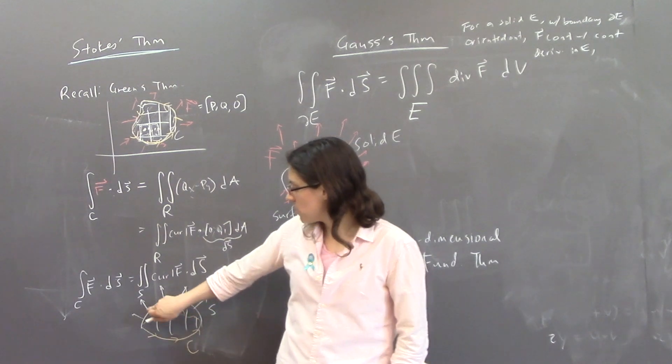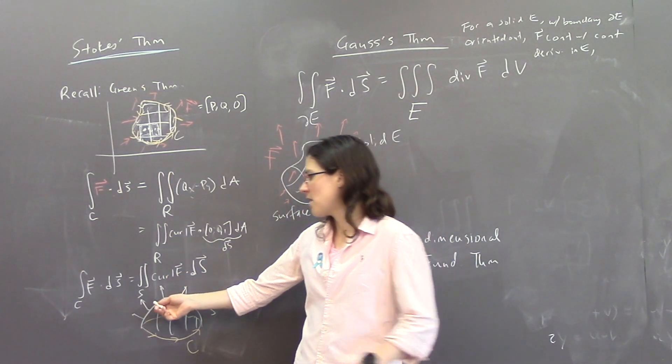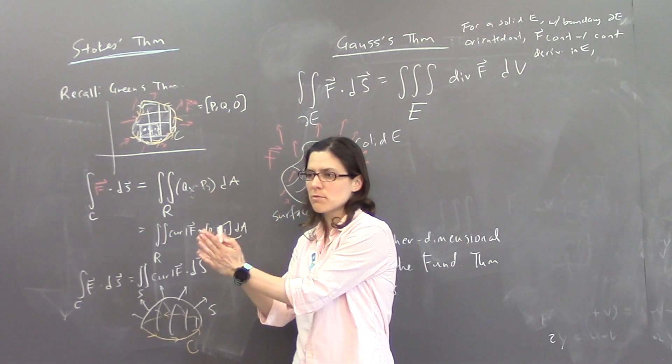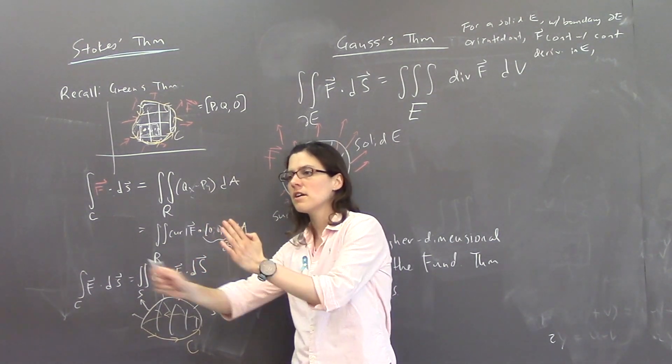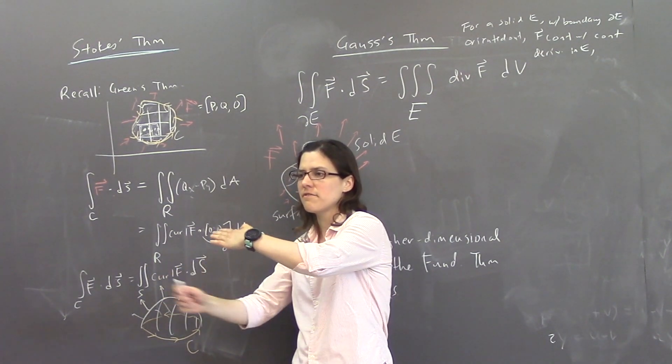So you're, when you take the dot product of the curl vector with the surface, you're measuring how much this vector, that curl vector is pointing in the same direction as the normal vector to the surface. So, that's saying, like, how much the vector field is rotating in the plane of the surface.